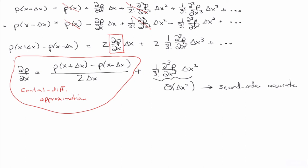This is called the central difference approximation for the first derivative. It's second-order accurate. It should be self-evident why: we're incrementing to x plus delta x and subtracting x minus delta x, so there's a symmetry about those increments versus the purely forward or backward difference.